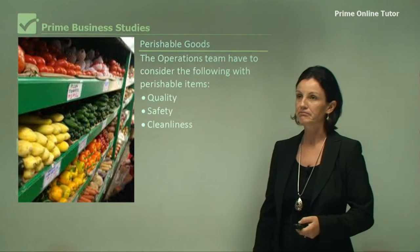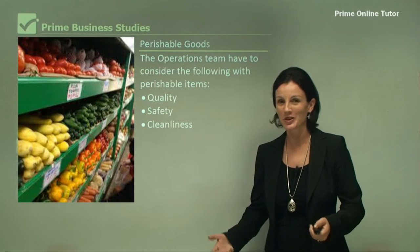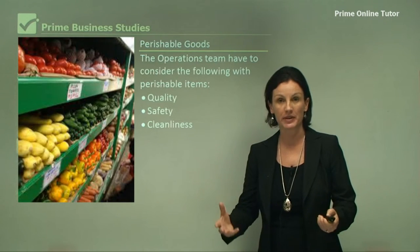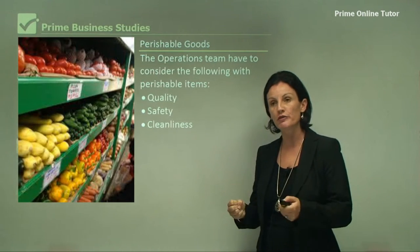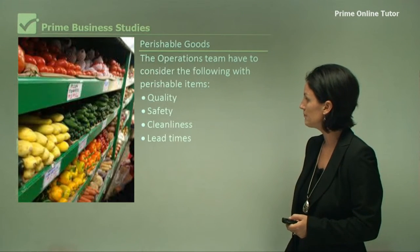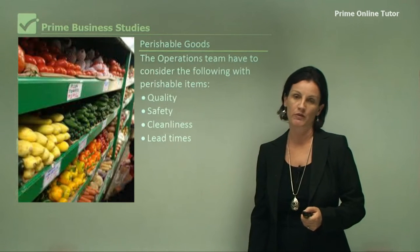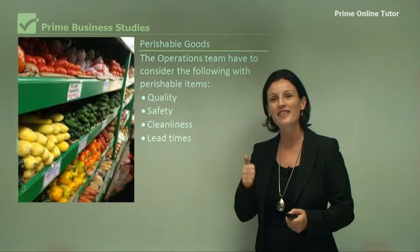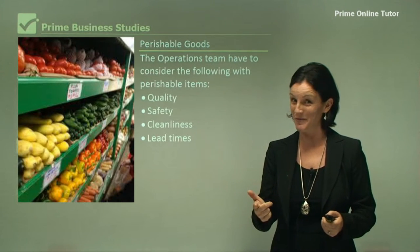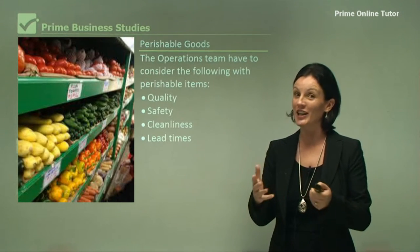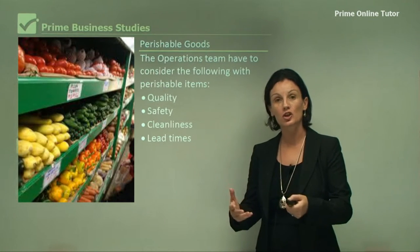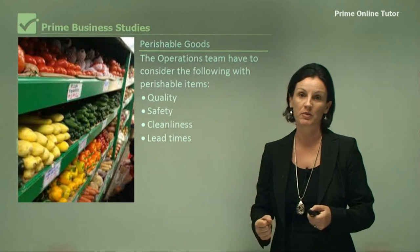Cleanliness is another consideration. Fruit and vegetables come from the land, and a consumer does not want to find a bug on their banana, so those goods need to be clean and fresh. Lead times are incredibly important with perishable items. Supermarkets should never run out of perishable items, but they also shouldn't have too much — if they have too much, they go off. But if they run out of pineapples, the consumer will go to another supermarket.